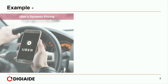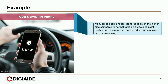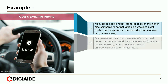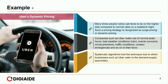An example of pricing in services is Uber's dynamic pricing. Many times people notice cab fares to be on the higher side compared to normal rates on a weekend night. Such a strategy is recognized as surge pricing or dynamic pricing. Companies such as Uber make use of normal peak hours, bad weather conditions such as rain, events like concerts or movie premieres, traffic conditions, and unseen emergencies in their favor. Systematic algorithms fuel the technique through which businesses like Uber cater to the demand-supply mismatch.